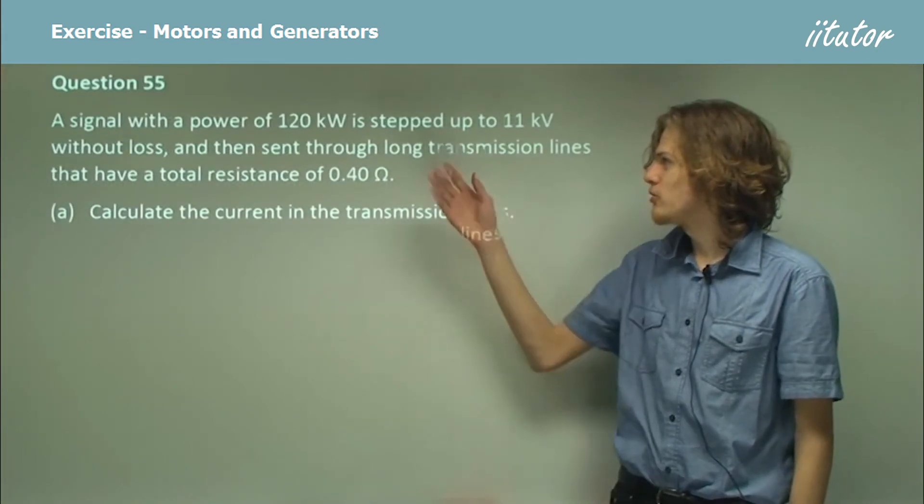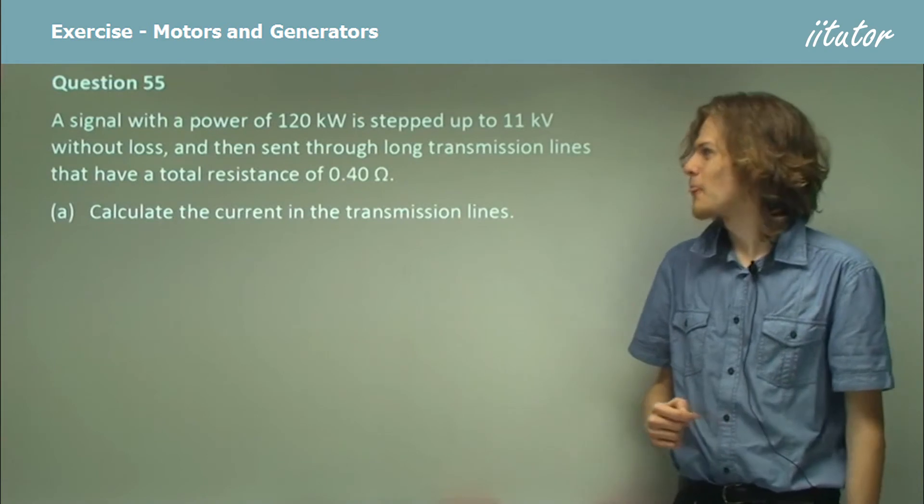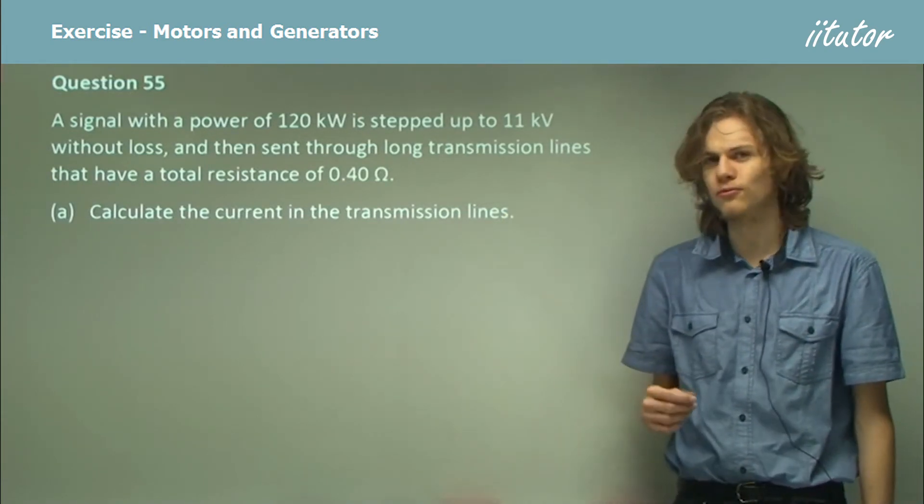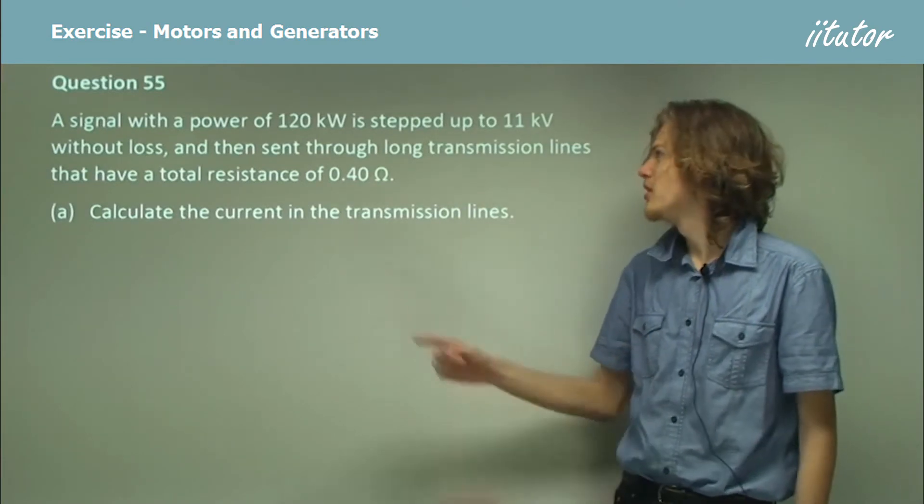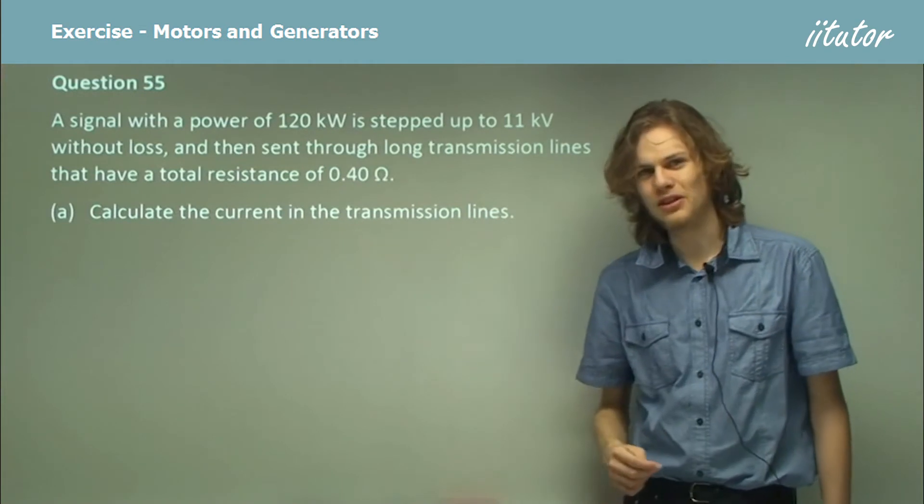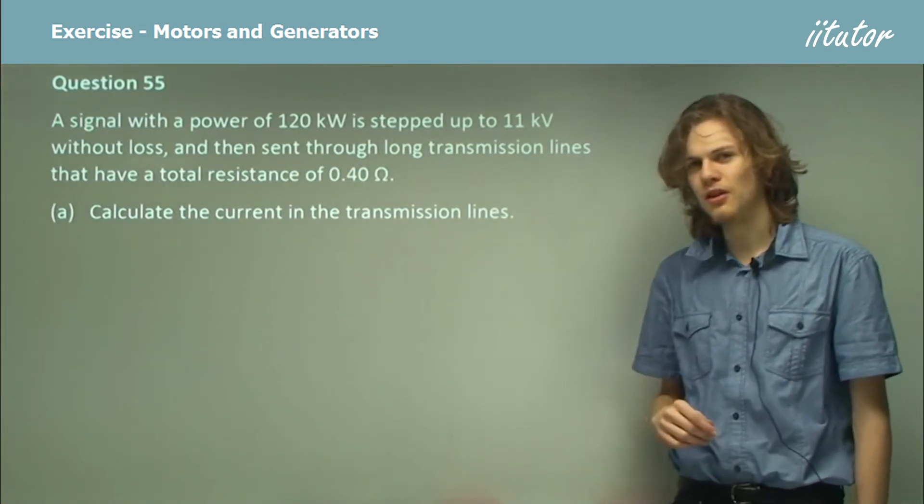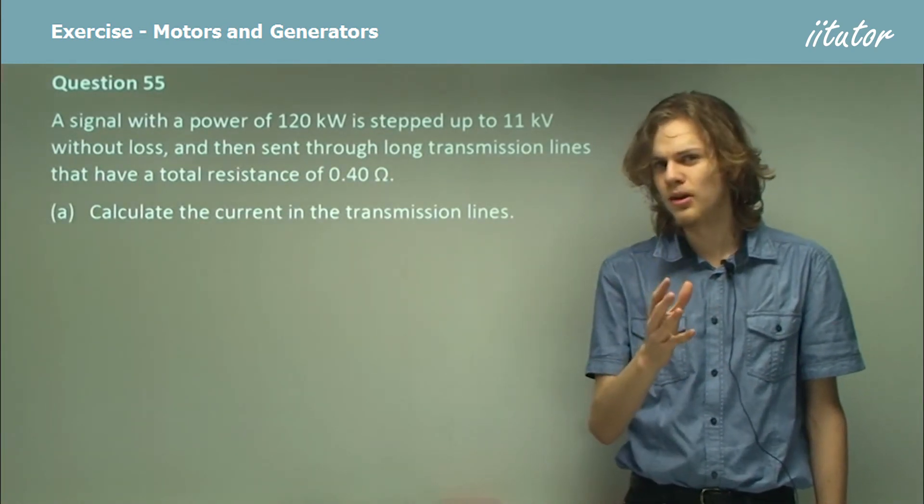So a signal with a power of 120 kilowatts is stepped up to 11 kilovolts without loss and then sent through the long transmission lines that have a total resistance of 0.4 ohms. So presumably they've used our advice from the earlier question to step it up to 11 kilovolts from 240 volts. Calculate the current in the transmission lines. Last time it was 500 amperes and we had a lot of loss. What will it be this time?